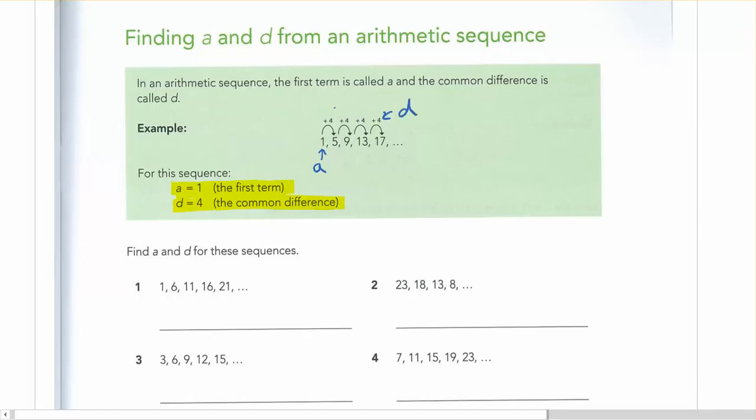So these are the same problems from the other page. You might notice that or you might not notice that. But again here, just identifying what they are. a is always the first term, so that's just going to be 1. And d in this case, we can see here that we're going up by plus 5 every time, so d is just 5.